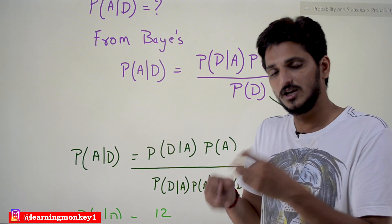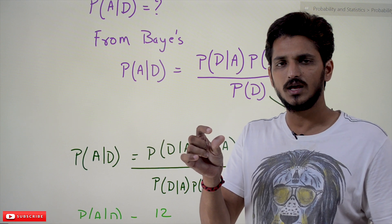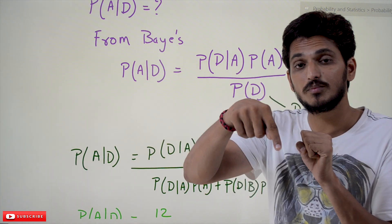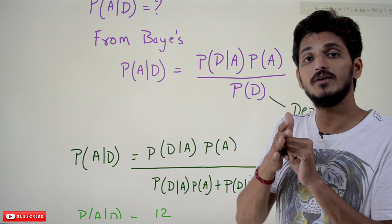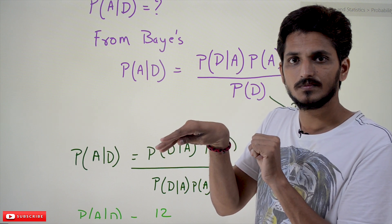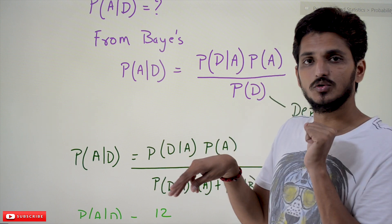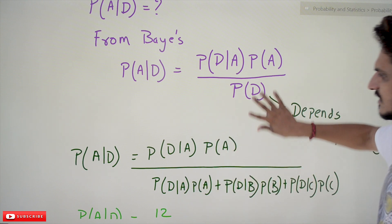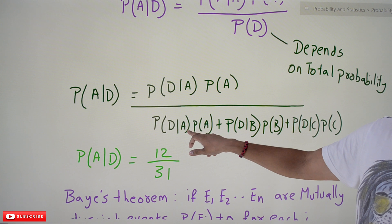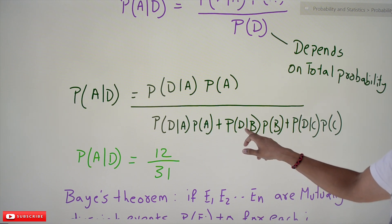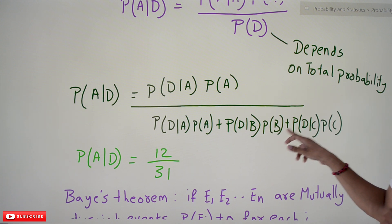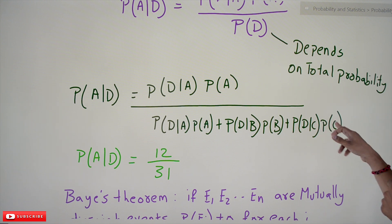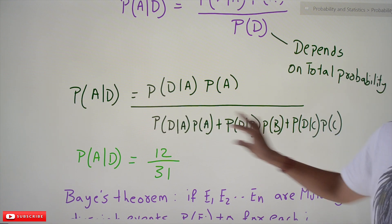If you go into the market and pick a bolt observed to be defective, the probability of picking that defective bolt depends on total probability, because in the back end it is coming from three different machines. So probability of D can be written as: P(D|A)·P(A) + P(D|B)·P(B) + P(D|C)·P(C). This is the total probability equation.